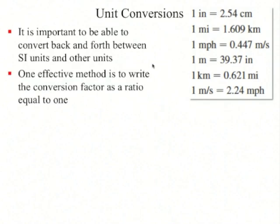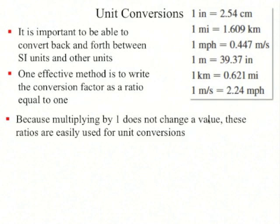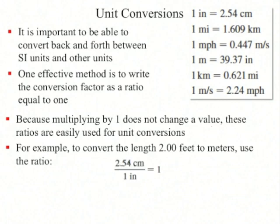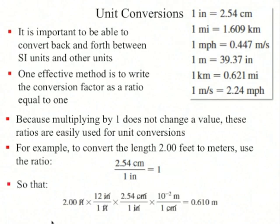It's important to be able to convert between different units, and one effective method is to write the conversion factor as a ratio equal to one, since multiplying by one does not change a value. For example, to convert length from feet to meters, you can use the fact that 2.54 centimeters is one inch, so that ratio equals one. Start with two feet, write a ratio with inches on top and feet on the bottom so the feet units cancel, giving 24 inches. Multiply by how many centimeters per inch to cancel inches, then by how many meters per centimeter. You end up with 0.610 meters equals two feet.